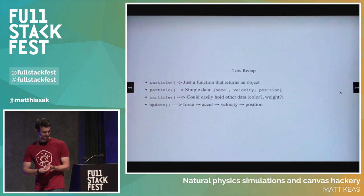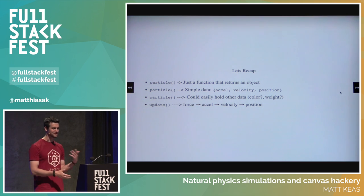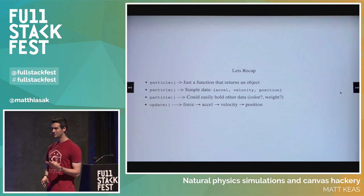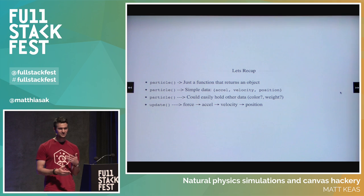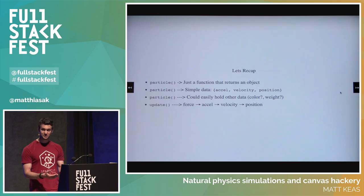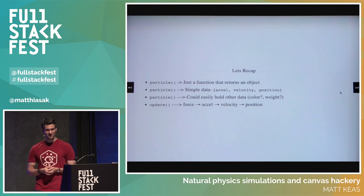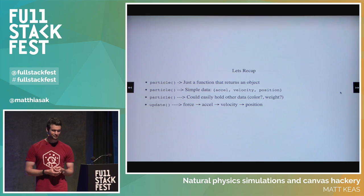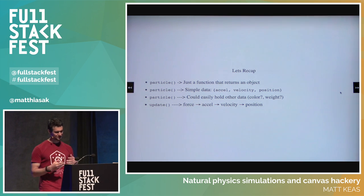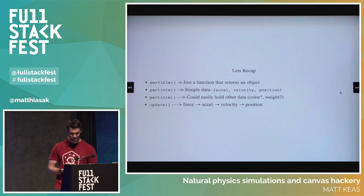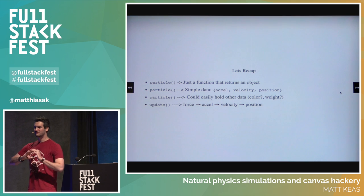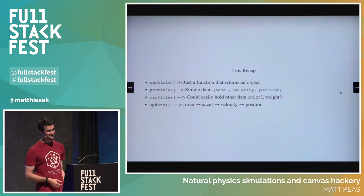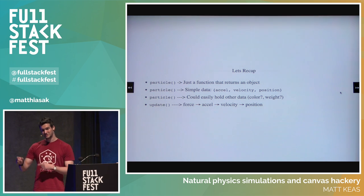Quick recap: we've got a particle — just a function that returns an object with simple data, primarily three things. We can add data using ES6 destructuring to build up extra levels without dealing with problems of taxonomy of functions and prototypes. We can also hold other data in there. Then applying force to a particle changes the acceleration, which changes the velocity, which changes the position — all because of this update loop.